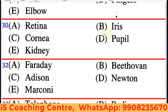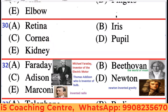Next: Retina, Iris, Cornea, Pupil, Kidney. Retina, Iris, Cornea, and Pupil are all parts of the eye. Kidney is not related to the eye. So Kidney is the odd one out.